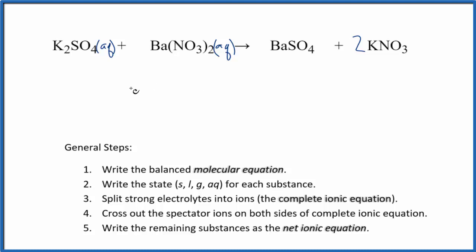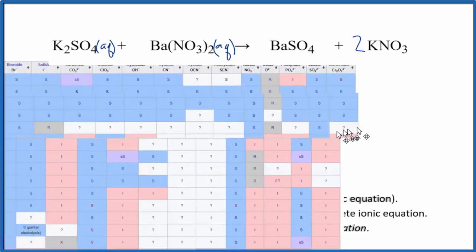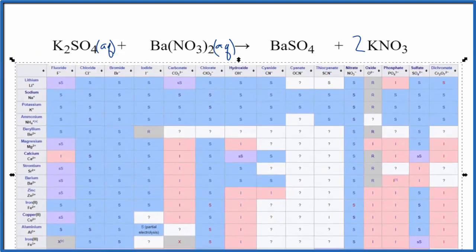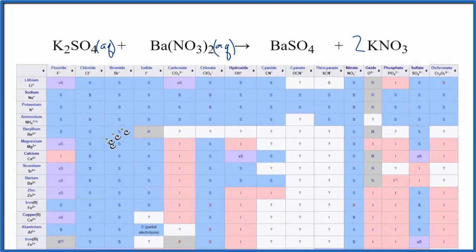For the barium sulfate, let's look that up on a solubility table here, just to make sure. So as we look at our solubility table, barium is right here, so we can go across, and then sulfate is right here. So here's our barium sulfate. It has that I next to it.